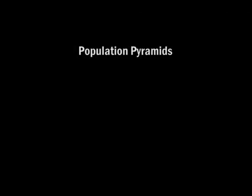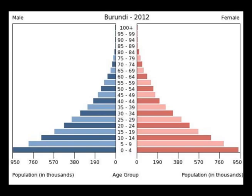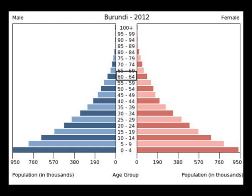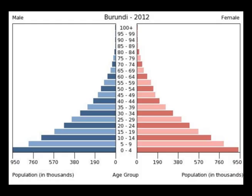So how can we tell what stage of the demographic transition model a country is in? One very useful tool for analyzing a country's population is a population pyramid. A population pyramid is a graphic device that demonstrates the structure of a country's population by displaying age and gender groups on a two-sided bar graph. One side shows female population, the other shows male population. Each bar displays an age group, starting with the youngest at the bottom. Some population pyramids show this as a percentage, others show total population at each age group. Either way, the shape of the pyramid tells us a lot about that country's population.